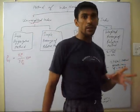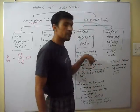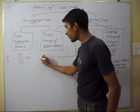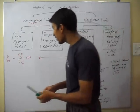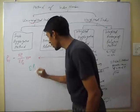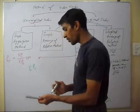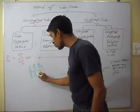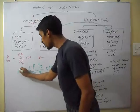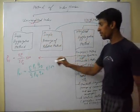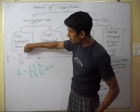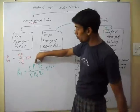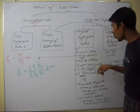In the weighted aggregate method, we have two approaches. In the Laspeyres method, we use base year quantity as the weight. The formula is: sigma P1 Q0 divided by sigma P0 Q0, multiplied by 100. We multiply current year price P1 with base year quantity Q0, and base year price P0 with base year quantity Q0.